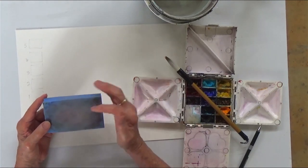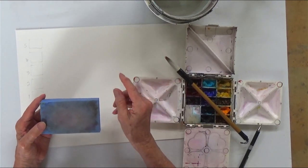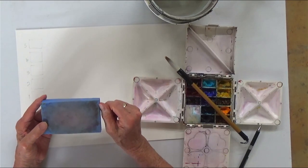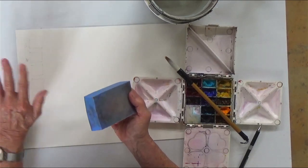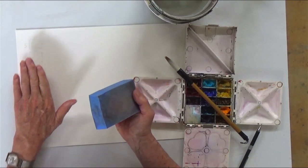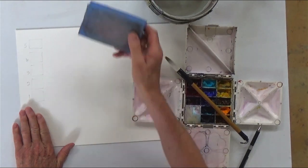The wetter the water, or the more water that you use, the more it will dilute the paint when it goes on your paper. And it dries, instead of drying dark, it will dry light.